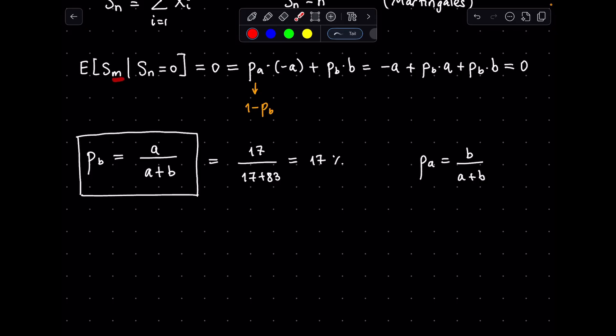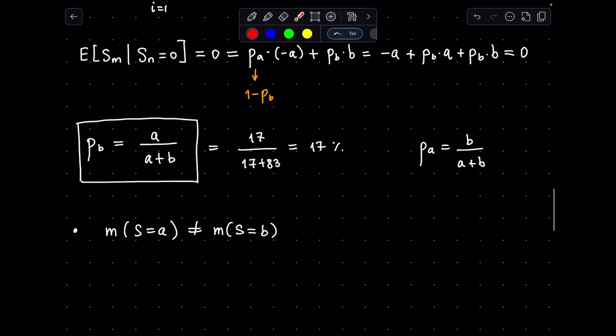Note that the index m, namely the terminal step number, is different for when s equals a and s equals b in general. The above equation doesn't care about this though, as we are simply writing the expected value of the terminal distances.